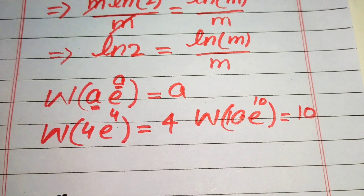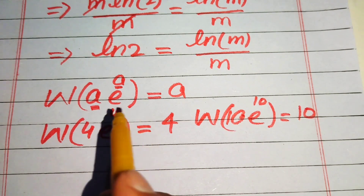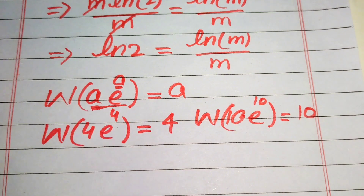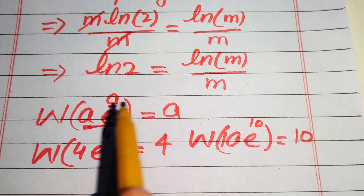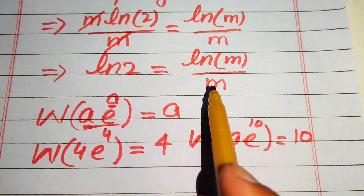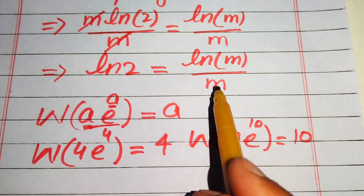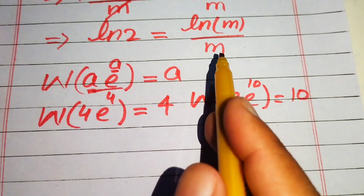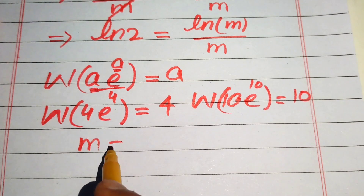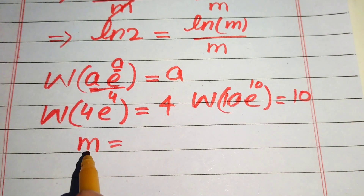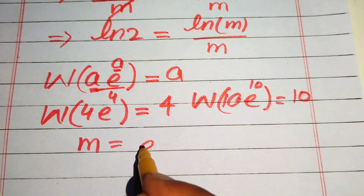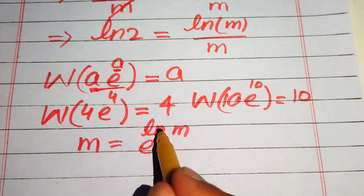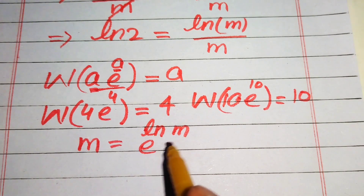Before applying the Lambert W function, we need to convert our expression into the form a·e^a. We first need to make an exponential term with base e. Since e to the power of log m equals m — because the natural log and e cancel each other — we replace m with e to the power of log m.